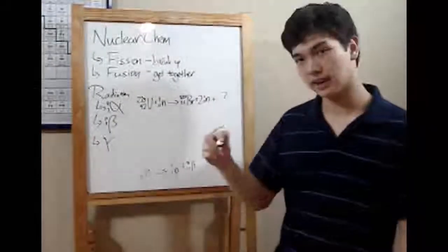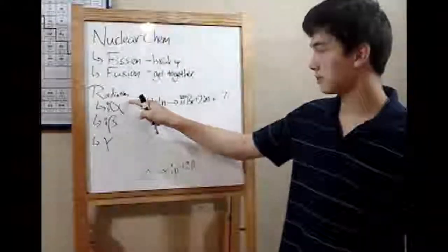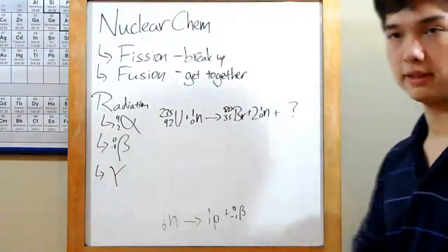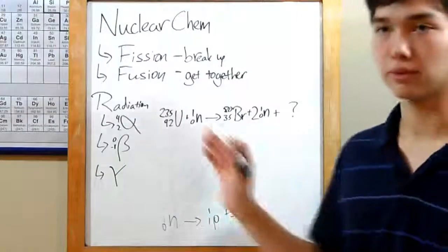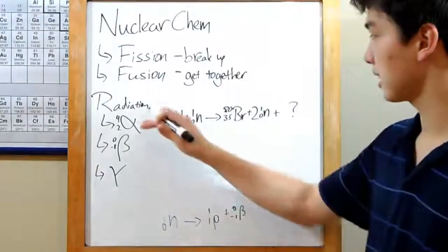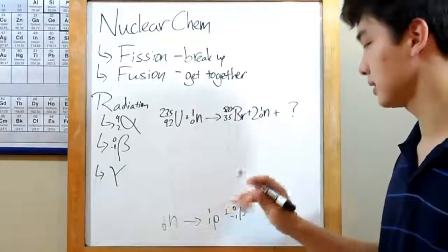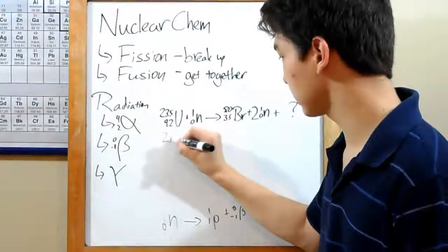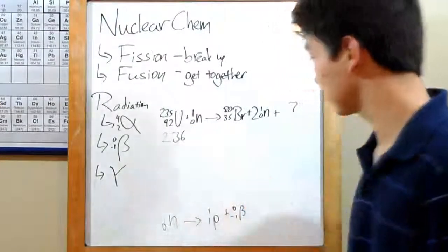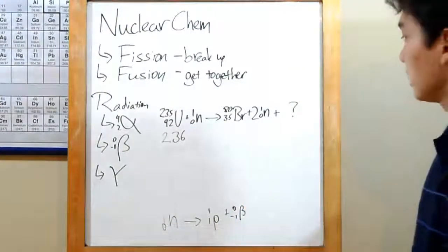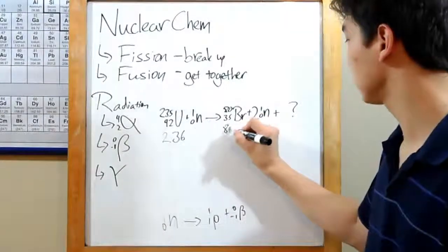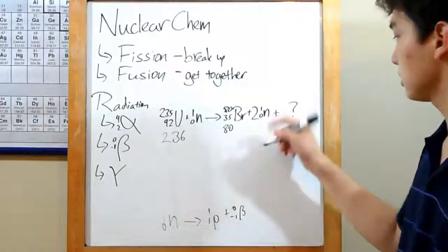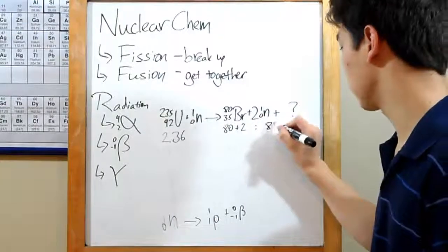That means atomic weight and atomic number. On top here, this number 235 is the atomic weight. Make sure it's the same for one side of the equation as the other side. So here we have 235 and 1 from the neutron for a total of 236 on the atomic weight. Let's head over to the other side. We have an 80 from the bromine and 2 neutrons, so 2 times 1 is 2, for a total of 82 on the weight.